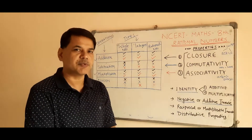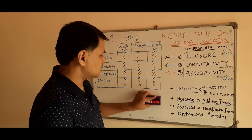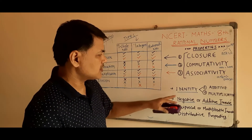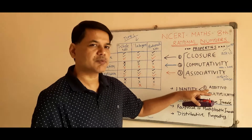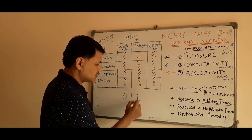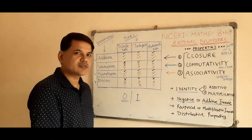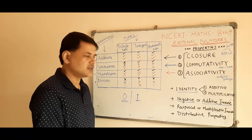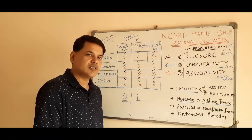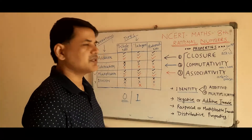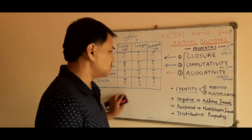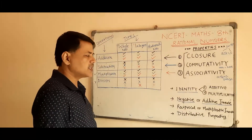The next important topic while learning these properties is identity. There are two types: additive identity and multiplicative identity. Take the numbers zero and one. If we add zero to any number, the result remains the same — so zero is the additive identity. Similarly, if we multiply anything with one, it remains the same — so one is the multiplicative identity. Just remember: zero is additive identity, and one is multiplicative identity.